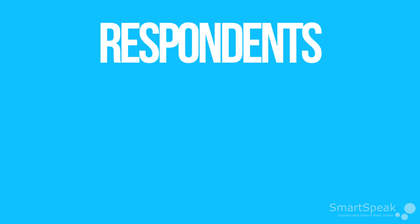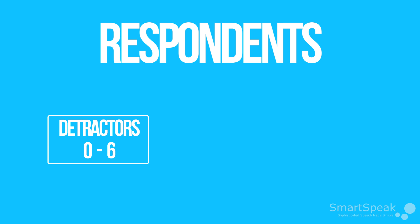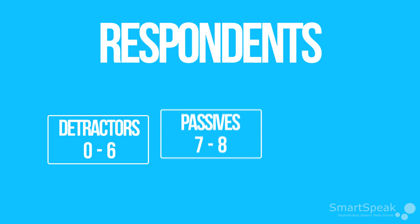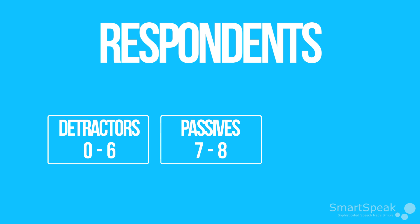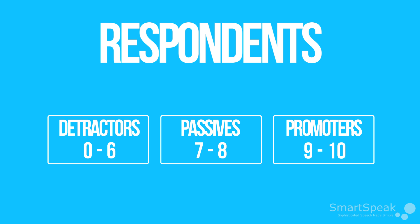First, write down the total number of respondents that rated between 0 and 6. These are known as your detractors. Next is the total number of respondents that rated between 7 and 8, also known as your passives. And lastly, how many respondents rated either a 9 or 10? These are your promoters.